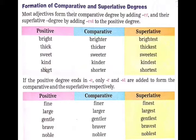यहाँ पर कुछ positive, comparative, superlative degree दिए गये हैं. जैसे: bright, brighter, brightest; thick, thicker, thickest; sweet, sweeter, sweetest; kind, kinder, kindest; short, shorter, shortest.